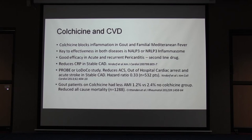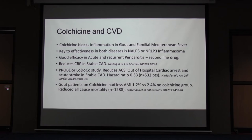The LoDoCo study — low-dose colchicine study — showed that colchicine reduces acute coronary syndromes, out-of-hospital cardiac arrest, and acute stroke in stable CAD, with a hazard ratio of only 0.33, showing marked benefit. It has also been seen that in gout patients on colchicine, fewer acute myocardial infarctions occur: 1.2% versus 2.4% without colchicine.